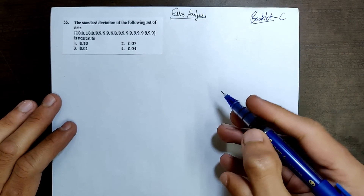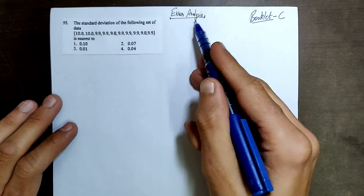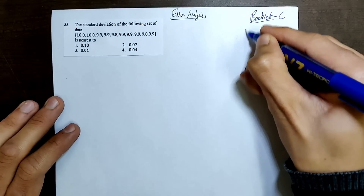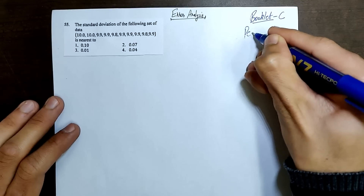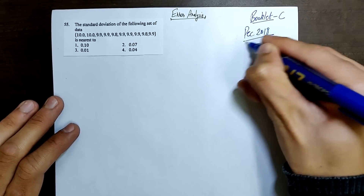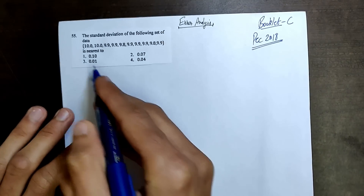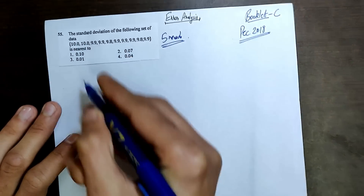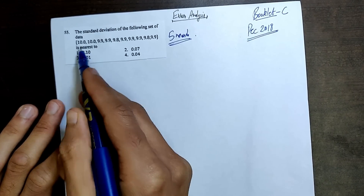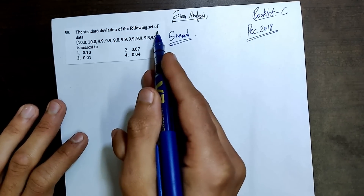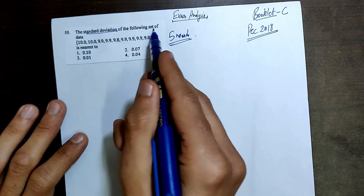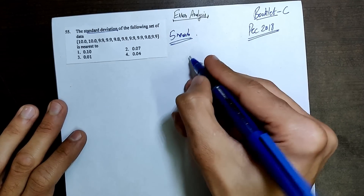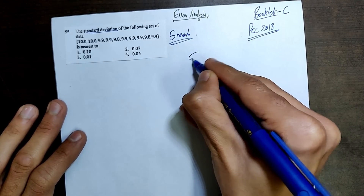Hello guys, now I will solve an error analysis question which came in December 2018 CSE NET question paper. It's a 5 marks question. We have to calculate the standard deviation of the following set of data, which is nearest to a given option.